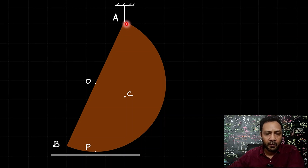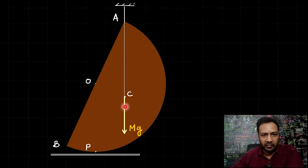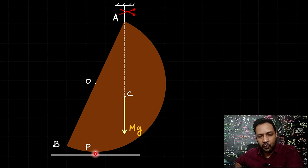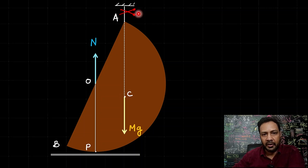When we cut the string, the normal reaction will be created at the point of contact. Just after cutting, the weight vector line of action remains the same as before. The normal reaction acts at the point of contact P. Since the string is removed, the hemisphere will undergo combined translational and rotational motion. The center of mass is at 3r/8 from the geometric center, and we can understand this will be a combined translation and rotation motion.